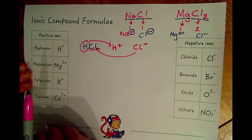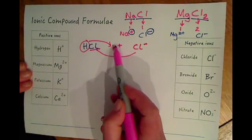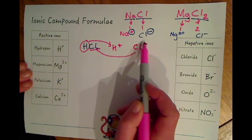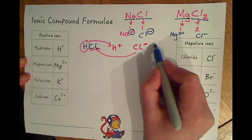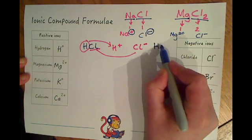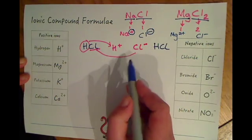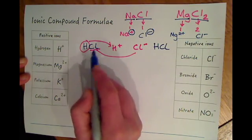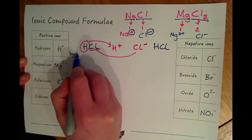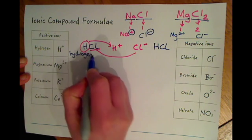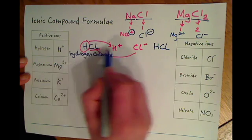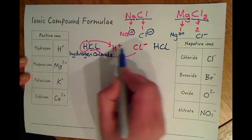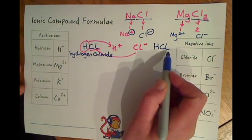We need to count how many pluses and minuses we've got, so we've just got one plus and one minus. They cancel each other out so we just need one of each one in the formula, so we end up with HCl. HCl, and I'd already written that over there, so this is hydrogen chloride, and that's how we get to this because we have one plus one minus so we end up with HCl.